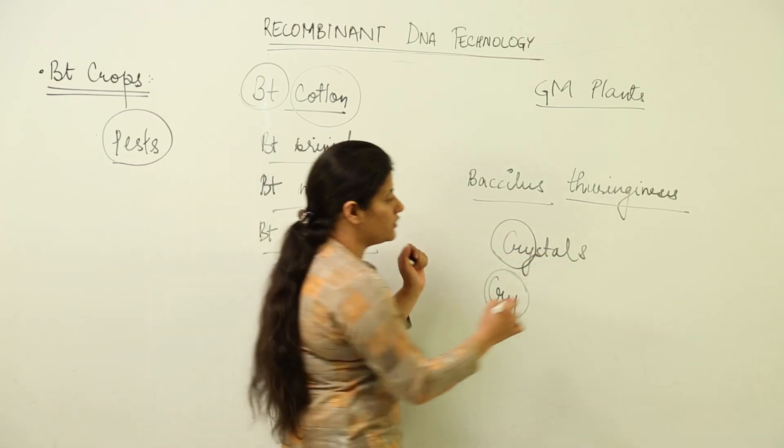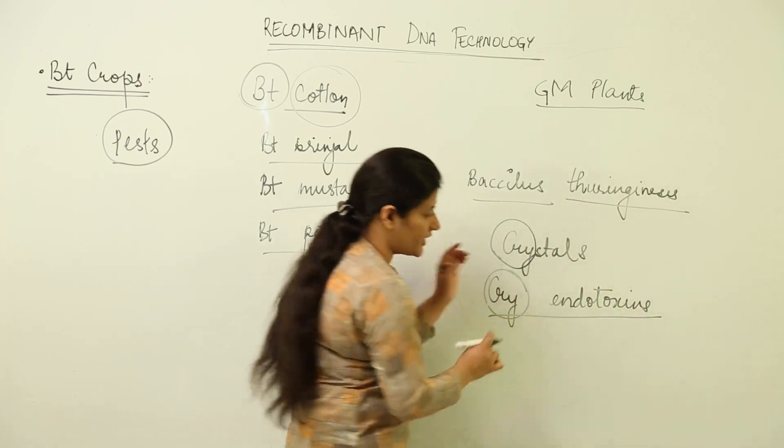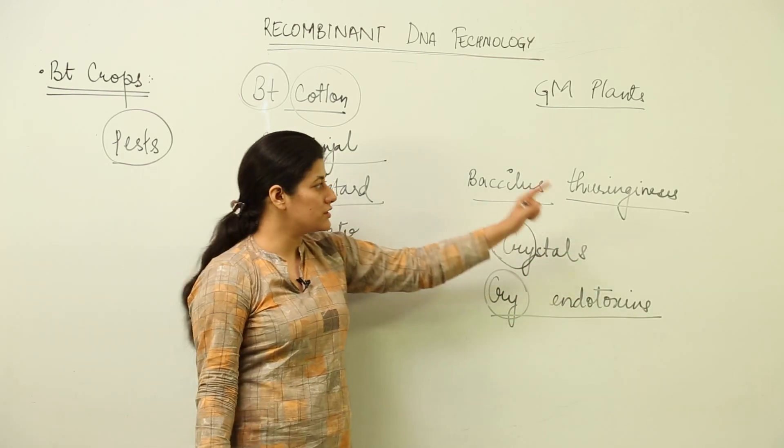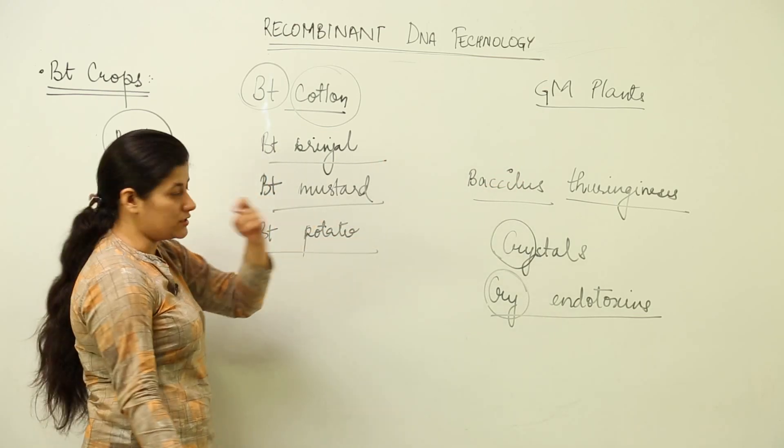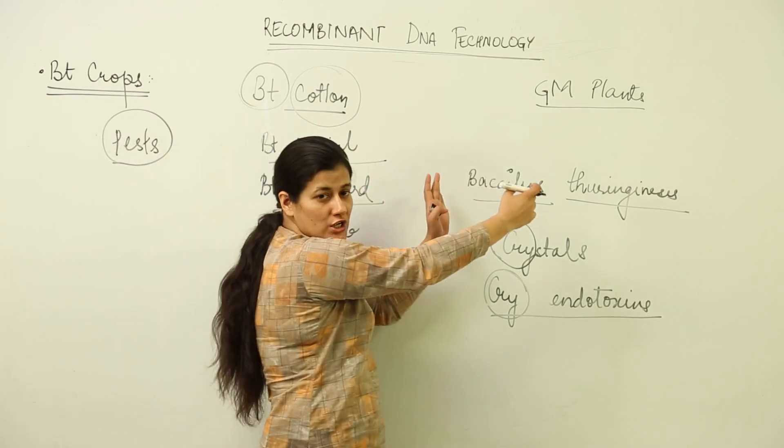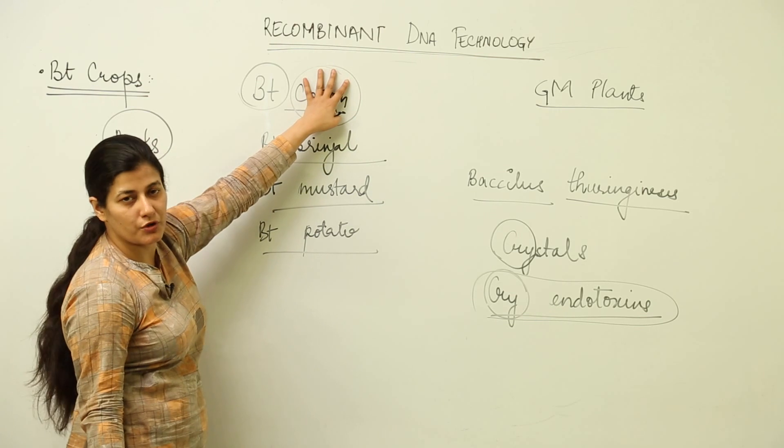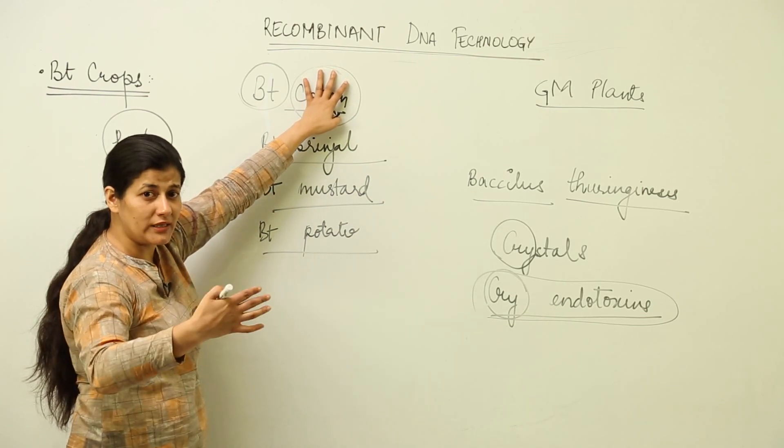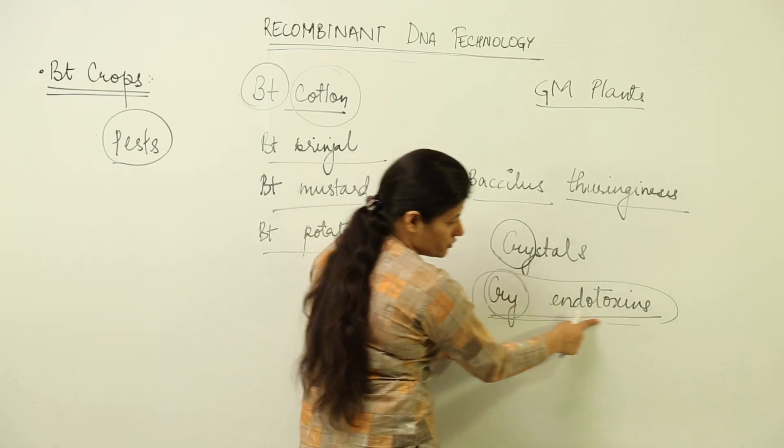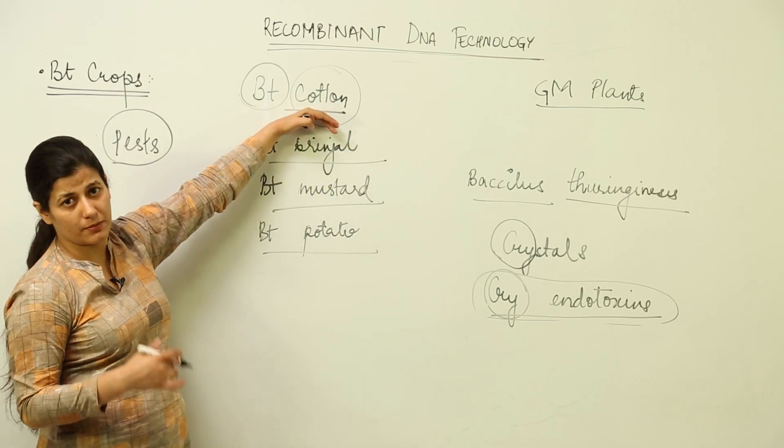There is a category of endotoxins - cry is the crystal type. We have to deal with cry endotoxin which this bacteria produces. We want a genetically modified crop, a cotton that will have the genes responsible for producing these endotoxins. The cotton will have its own genome and along with that, a gene incorporated in its DNA which will code for cry endotoxins. This cotton will produce these endotoxins just like the bacteria.